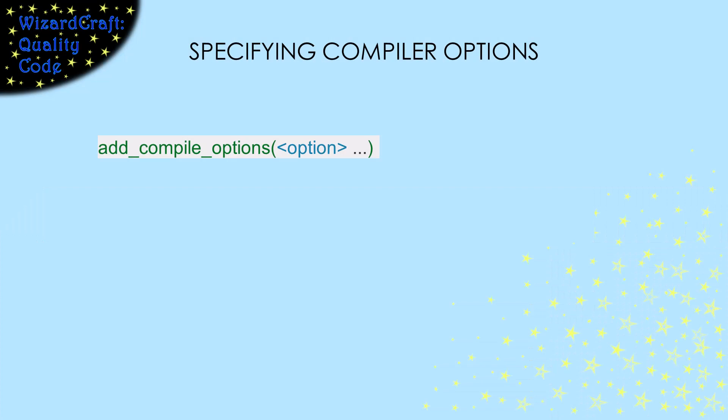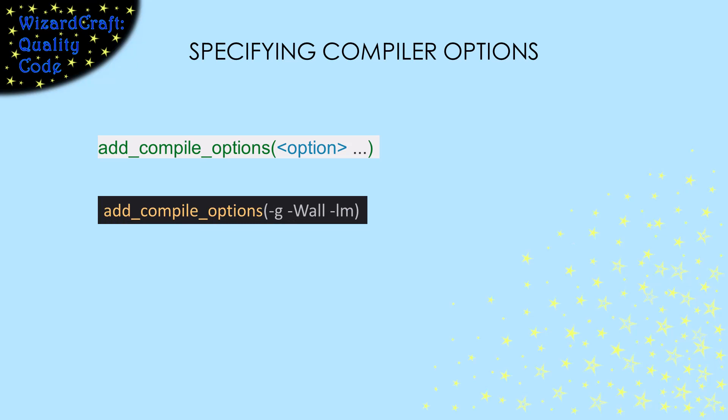In addition to setting the compiler version, you can set the compiler options that you want to use. The parameters here are exactly the flags that you'd like the compiler to use.